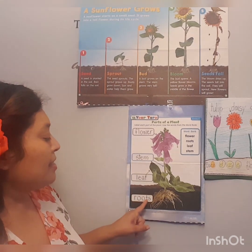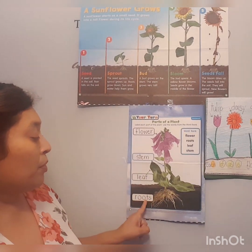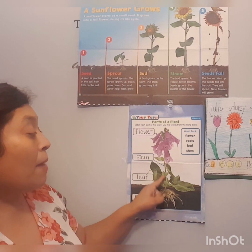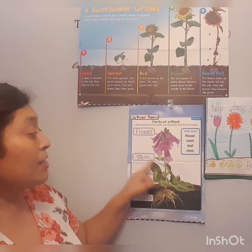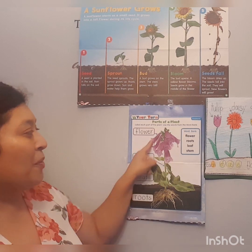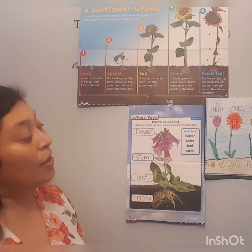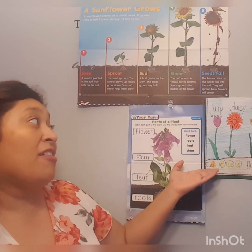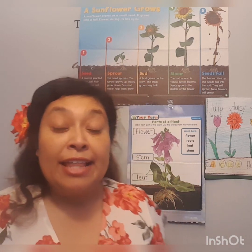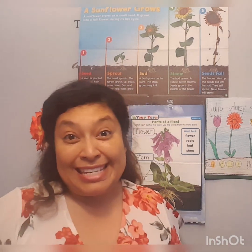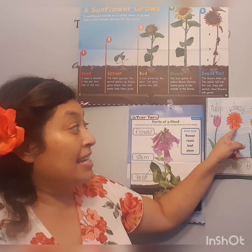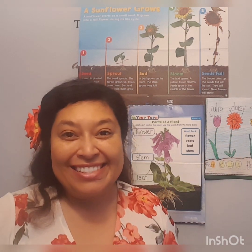You can see that below the ground are the roots. The leaves are above the ground as well as the stem and the flowers. I also have a drawing of three different types of flowers that grow during the season: tulips, daisies, and daffodils.